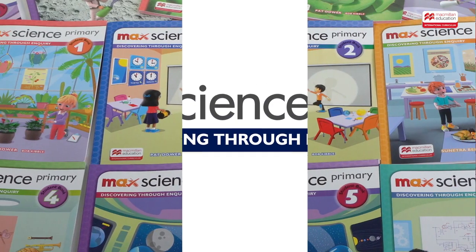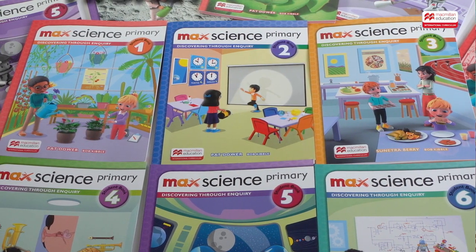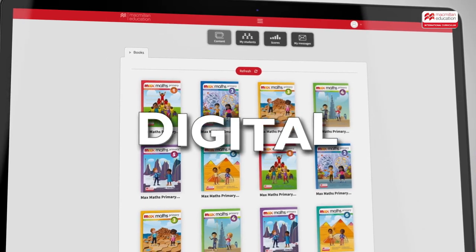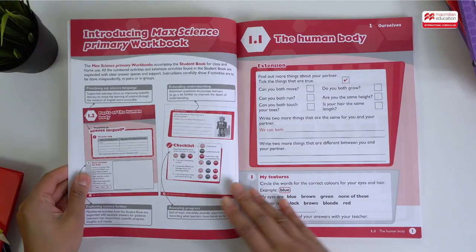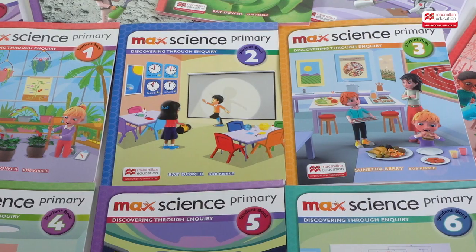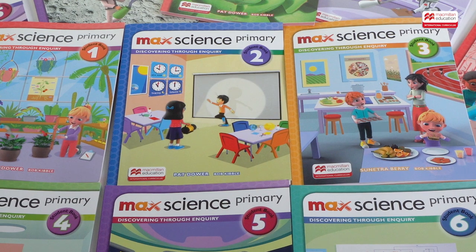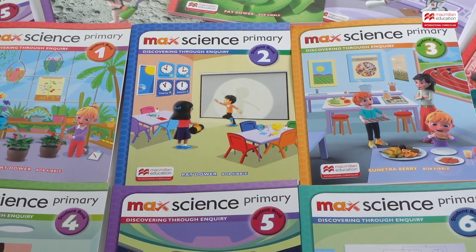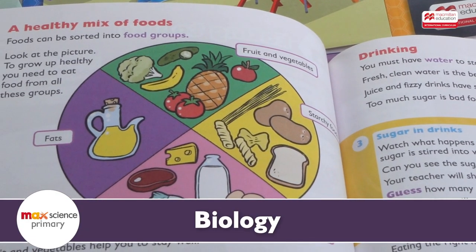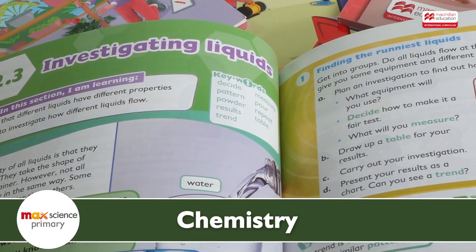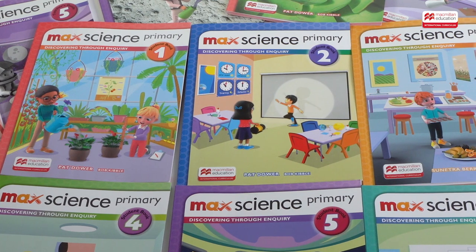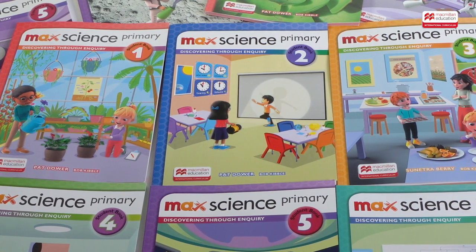Mac Science Primary: Discovering Through Inquiry is a highly engaging and effective print and digital scheme based on the most successful teaching methodologies used in world science today. Over six stages, Mac Science Primary introduces students to the key concepts and topics of primary biology, chemistry, and physics, with carefully scaffolded resources that build knowledge and confidence throughout the course.